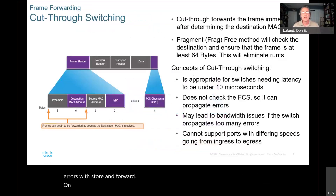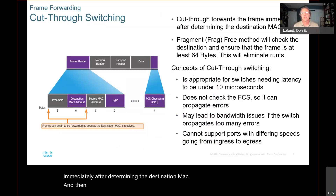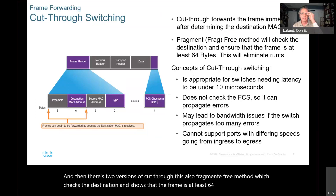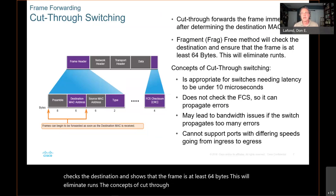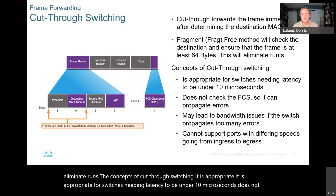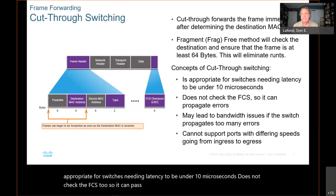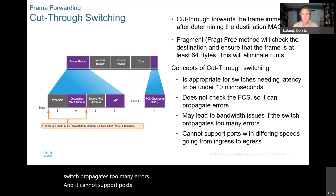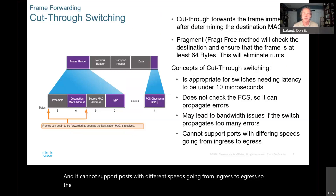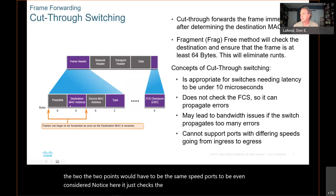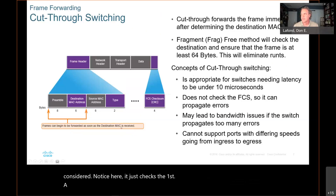Cut-through switching forwards the frame immediately after determining the destination MAC. There are two versions: standard cut-through and fragment-free, which also ensures the frame is at least 64 bytes, eliminating runts. Cut-through switching is appropriate when latency needs to be under 10 microseconds. However, it does not check the FCS, so it can pass along errors, potentially causing bandwidth issues if too many errors propagate. It also cannot support ports with different speeds between ingress and egress — both ports must be the same speed.